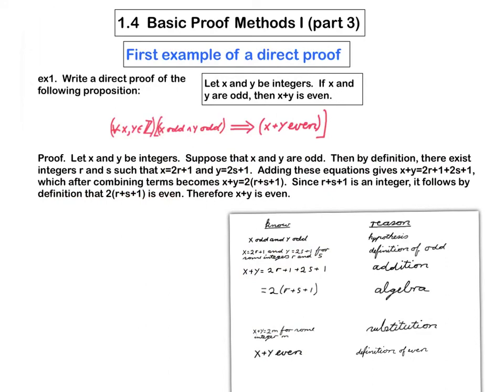And so, finally, I have the right to say, therefore, x plus y is even. Because x plus y is equal to the thing that I've just asserted is even. Remember, we had said that the very last sentence should be, therefore, x plus y is even.